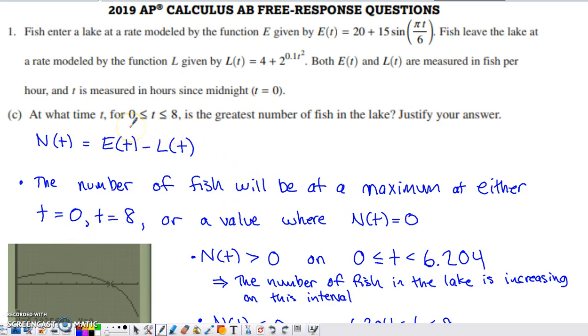Part C says, now consider the time interval from zero to eight. At what time t within that interval is the number of fish in the lake the greatest? Justify your answer. So what I thought to do here, and you've probably done something similar to this in other problems that you've looked at, you have competing rates of change. The rate that fish are entering, the rate that fish are leaving. I think it's convenient to have a new function defined that represents the net rate of change. So I defined my net rate of change function here, N(t), to be the rate that fish enter minus the rate that fish leave.